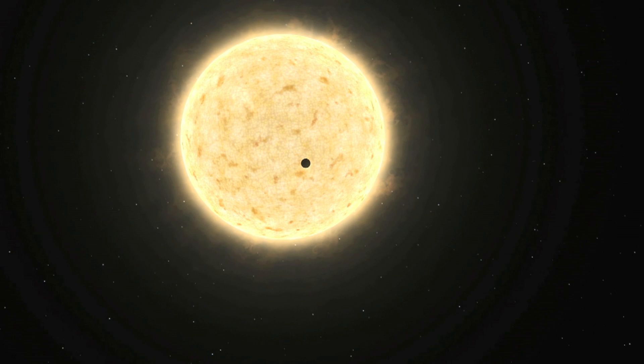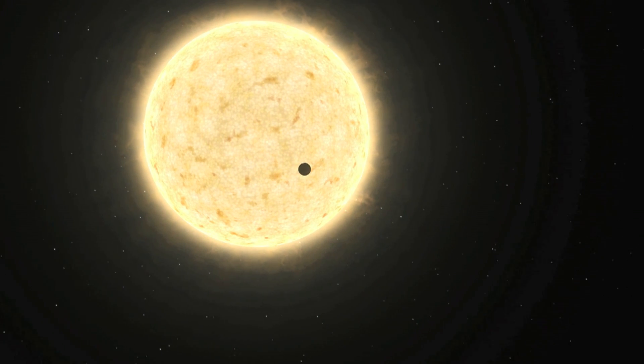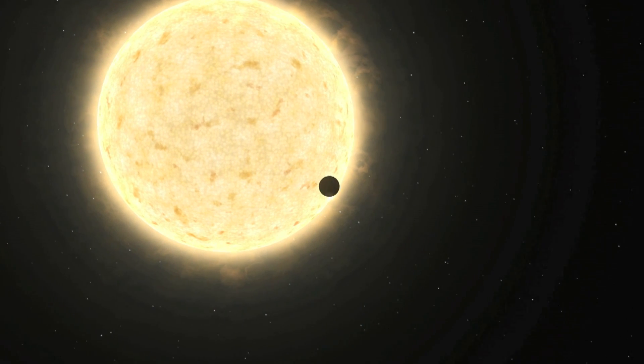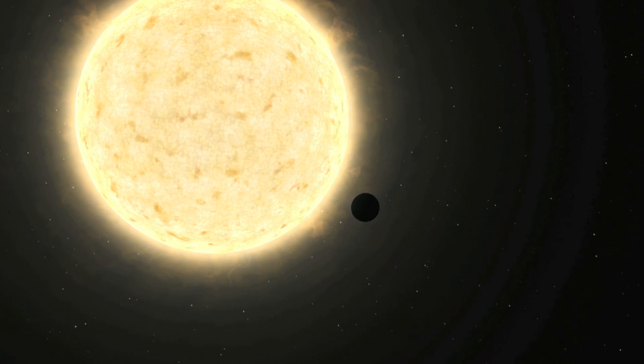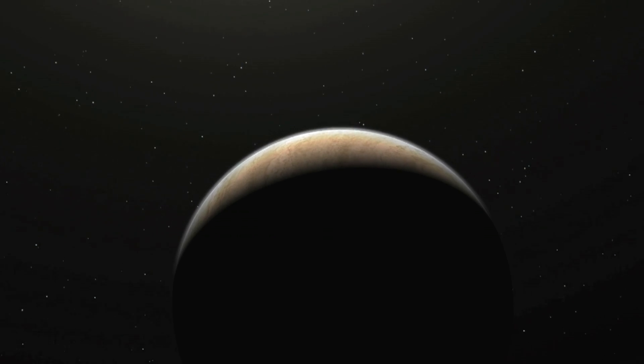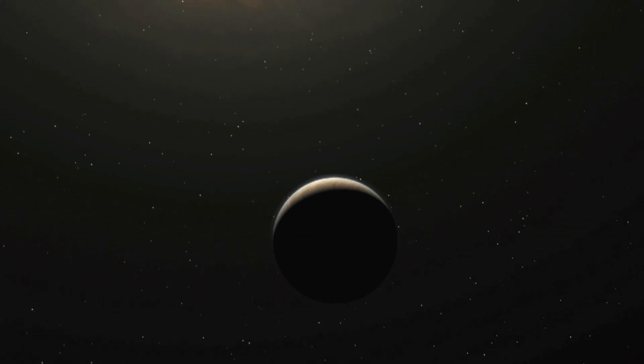And surprisingly, one of the newly found planetary host stars seems to be an almost perfect solar twin, a star that is essentially identical to our own Sun. It's the first exoplanet orbiting a solar twin in a star cluster to be discovered.